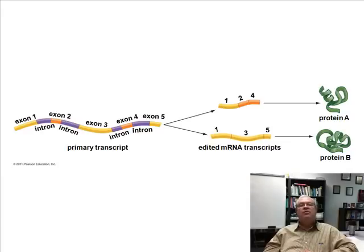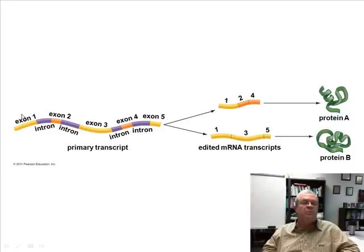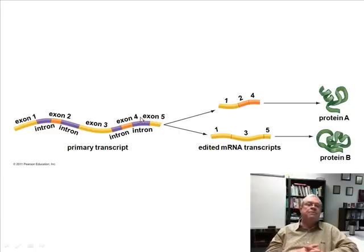And those go out to the cytoplasm when they get grabbed by a ribosome and translated, the result is totally different proteins. So from this very same primary transcript off the very same gene, two different proteins result depending on how the exons are combined.